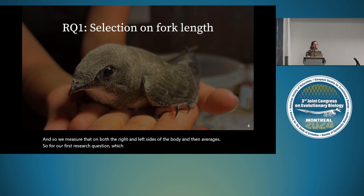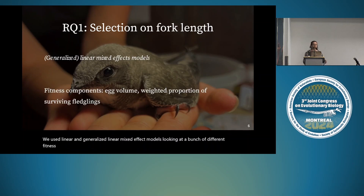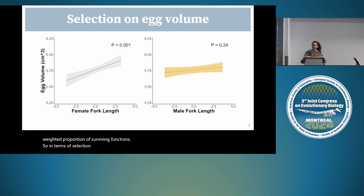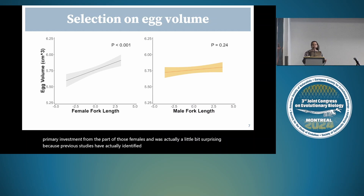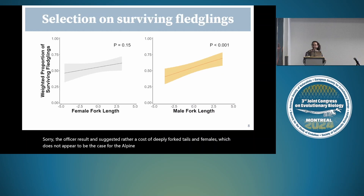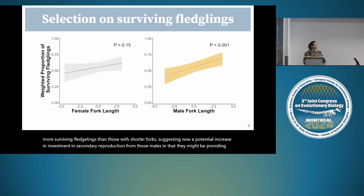For our first research question on sex-specific selection, we used linear and generalized linear mixed effect models looking at different fitness components. For selection on egg volume, we found directional selection on females but not on males—females with longer forks produce heavier eggs, suggesting increased primary investment. This was surprising because previous studies identified the opposite result, suggesting a cost of deeply forked tails in females, which does not appear to be the case for the alpine swift. For surviving fledglings, we found directional selection on males but not females—males with longer forks produce more surviving fledglings, suggesting a potential increase in parental care investment, though we need to look into that further.